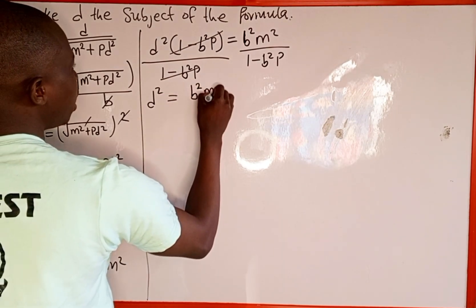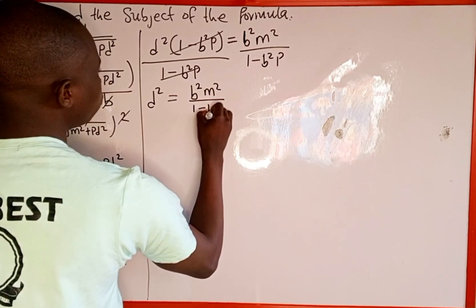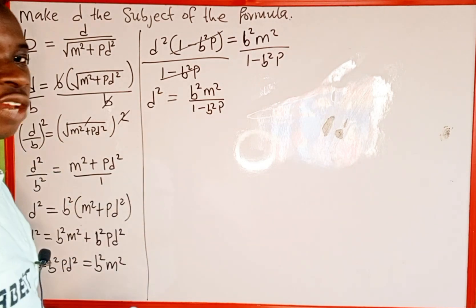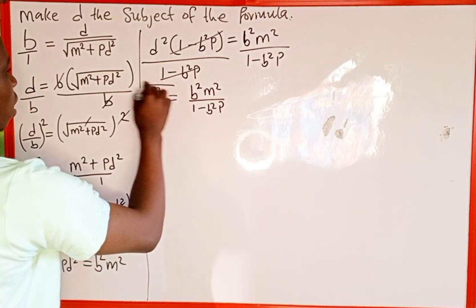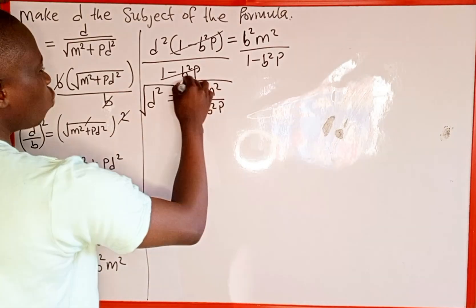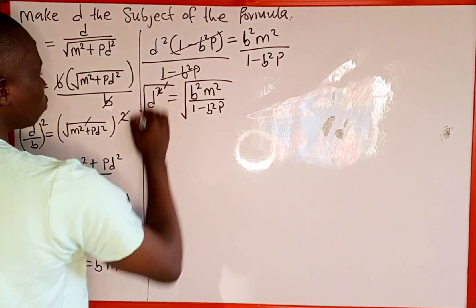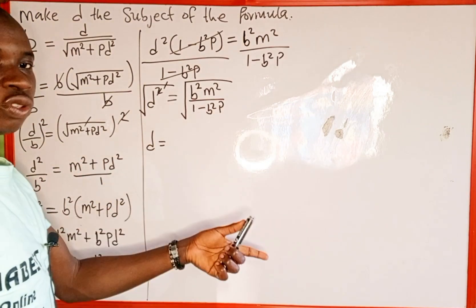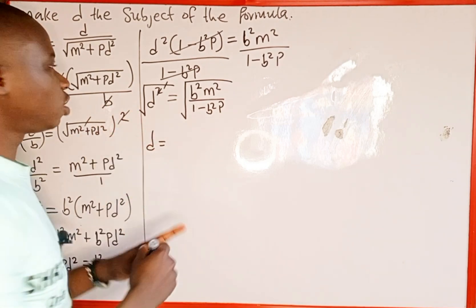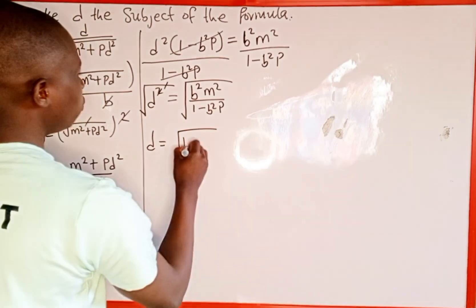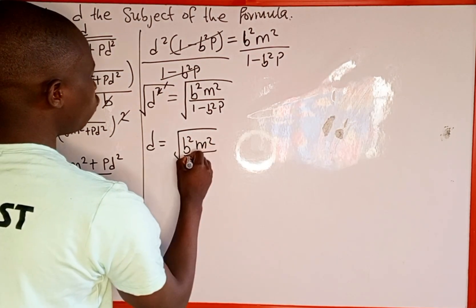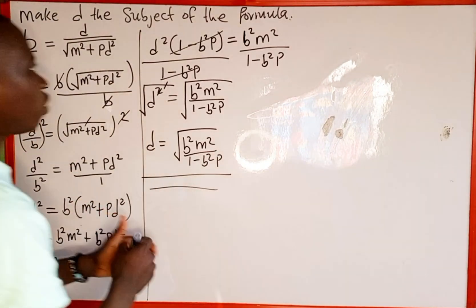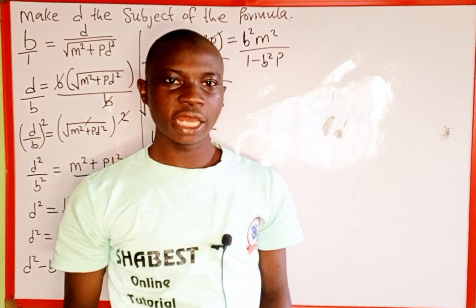We divide both sides by the coefficient of d squared, which is 1 minus b squared p, so that cancels and we're left with d squared equal to b squared m squared all over 1 minus b squared p. Then we take the square root of both sides to eliminate the square — taking only the positive square root — so d equals the square root of b squared m squared over 1 minus b squared p. And that is the value of d from this given equation. Thank you for watching, please follow and subscribe for more videos.